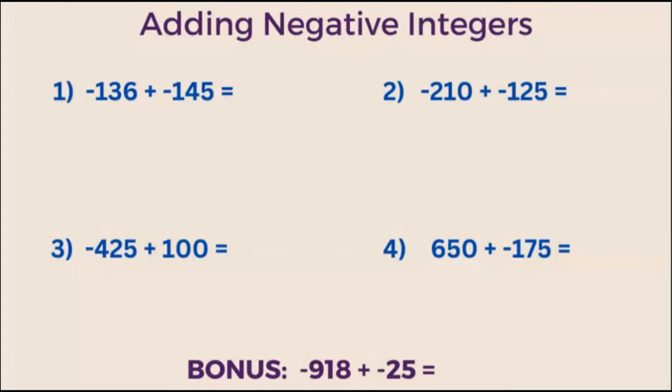Today we're going to talk about how to add negative integers. The process for adding negative integers is easy. Add the numbers as if they were positive and then add a negative sign. Let's walk through four examples of how you add negative integers.